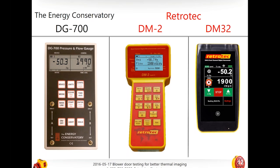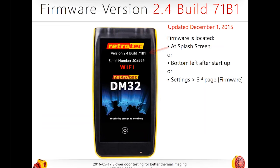I'd like to know which gauge you have — DM2, DM32, or DG700. Let me know if you have one or all three. This is going to be really important to help me focus my delivery and make sure I've customized it to you.